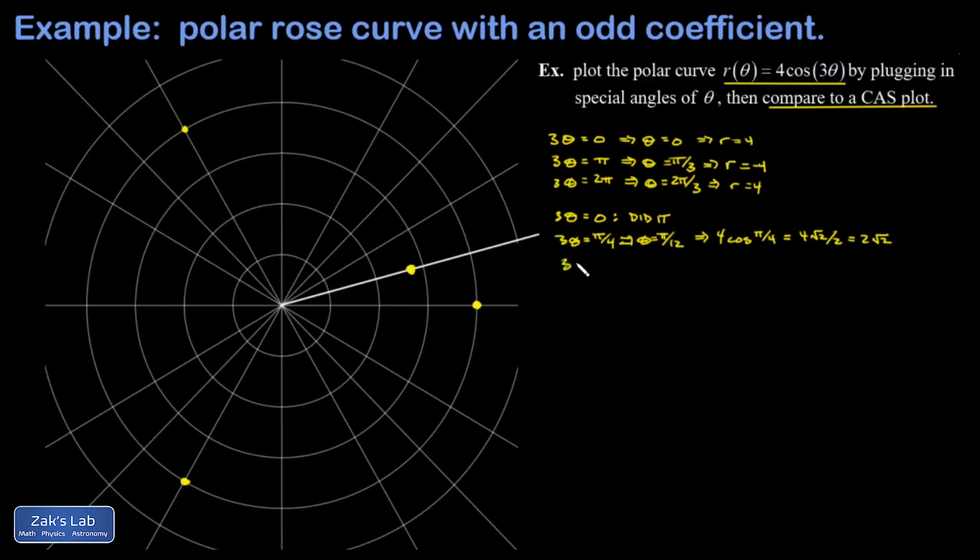Next we go to 3θ = 2π/4 or π/2. That means we're looking at an angle of θ = π/6, a familiar special angle, and my r value is going to be four times the cosine of 3θ, which is π/2. Well, the cosine of π/2 vanishes, so r is equal to zero by the time I get here.